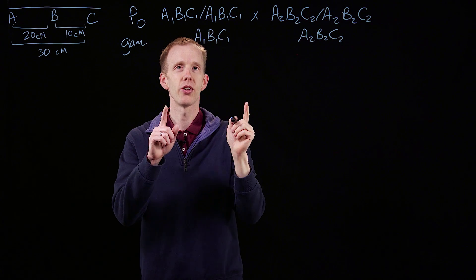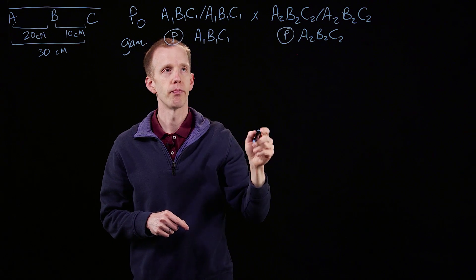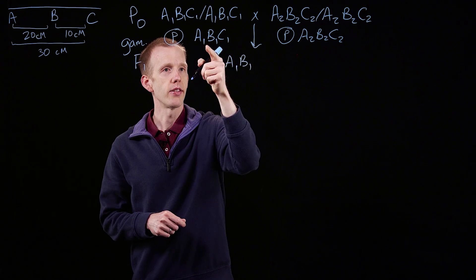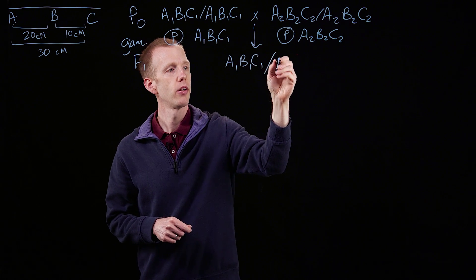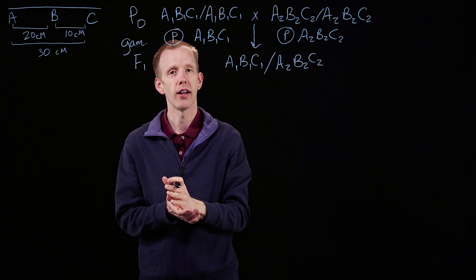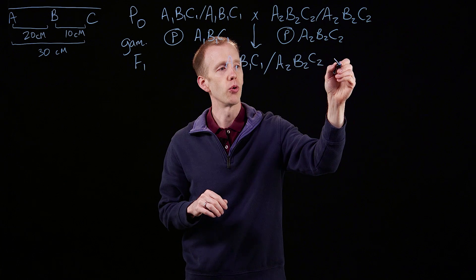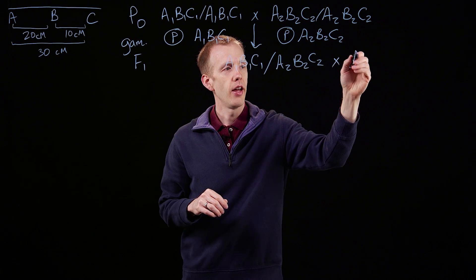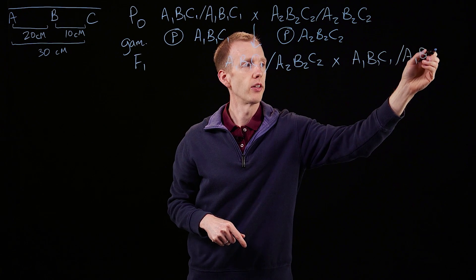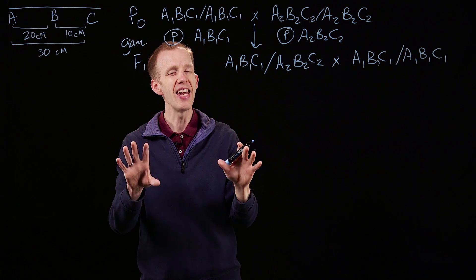The P0 gamete haplotypes are guaranteed to be A1, B1, C1 from one parent, and A2, B2, C2 from the other. These are the parental-type haplotypes. That creates an F1 trihybrid carrying the A1, B1, C1 haplotype from one parent and the two's from the other. Just like in two-point mapping, we're going to cross this F1 individual with a tester — an individual homozygous for all of the one alleles.